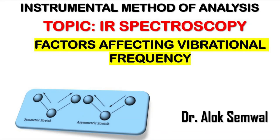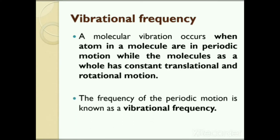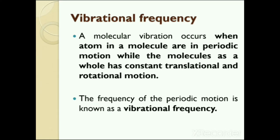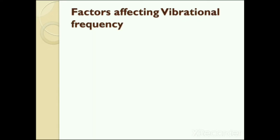Fundamental modes of vibration in infrared spectroscopy do not always occur at their expected positions. Our next topic is factors affecting vibrational frequencies. A molecular vibration occurs when atoms in a molecule are in periodic motion while the molecule as a whole has constant translational and rotational motion. The frequency of periodic motion is the vibrational frequency. There are several factors which affect vibrational frequency, including coupling vibrations, Fermi resonance, hydrogen bonding and electronic effects.